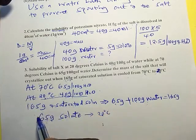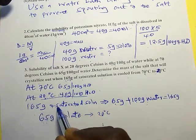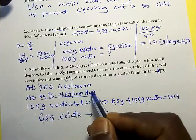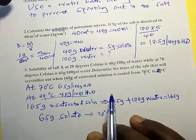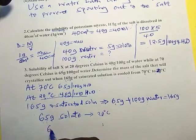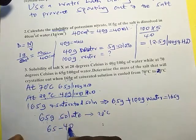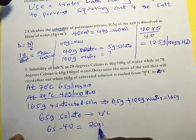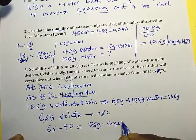It means the excess, the mass that is above 40, will form crystals. Now the crystals is 65 minus 40. We will have 25 grams of crystals that are going to be formed.